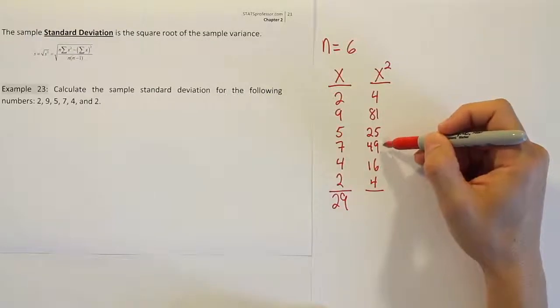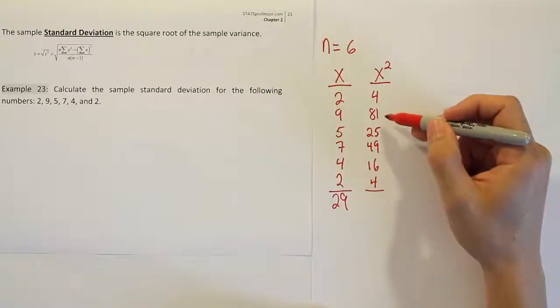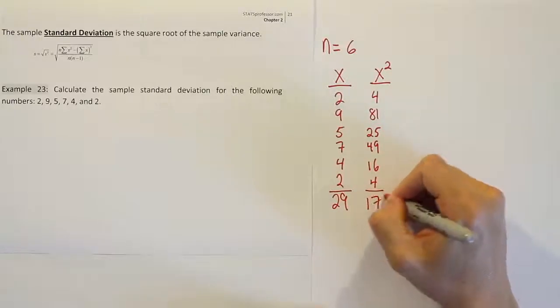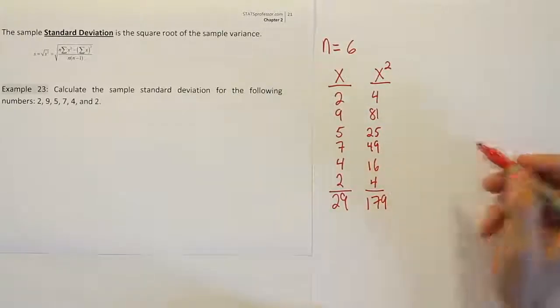Then we have 20, then 70, 150, 179 basically. Okay, so those are the sums of the two columns.